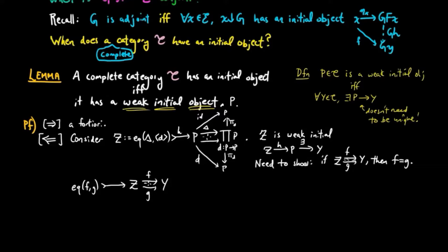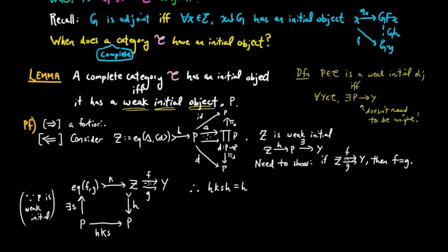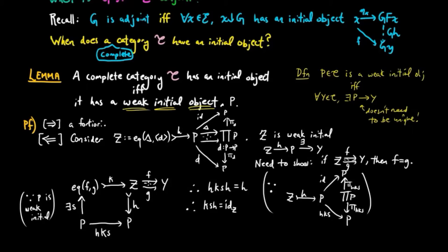Suppose we take this equalizer. Since P is a weak initial object, there exists a morphism S from P to the equalizer. We also have that Z is a sub-object of P with monomorphism H constructed above. By composition we have an endomorphism from P to P given by HKS. By definition of Z, we must have HKSH equal to H — that follows by replacing D in the diagram above by HKS. So H followed by HKS must equal H followed by the identity. Therefore, since H is a monomorphism (it was given by an equalizer, and all equalizers are monomorphisms), we have the left-cancellative property and can cancel H from the left, giving KSH equal to the identity on Z.